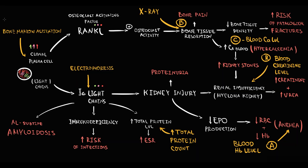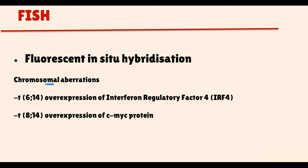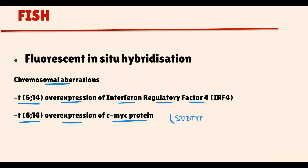By bone marrow aspiration, we can also take a bone marrow sample for fluorescent in-situ hybridization — so-called FISH analysis. By FISH, we can determine various chromosomal aberrations such as chromosomal translocations or deletions. For example, translocation between chromosomes 6 and 14 causes overexpression of interferon regulatory factor 4, or translocation between chromosomes 8 and 14 results in overexpression of c-MYC protein. By discovering the subtype of myeloma, we can predict the disease course and choose a more effective chemotherapeutic regimen.